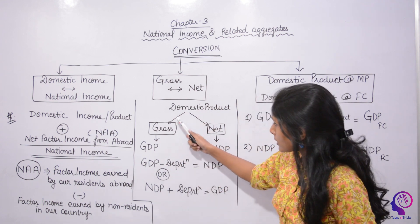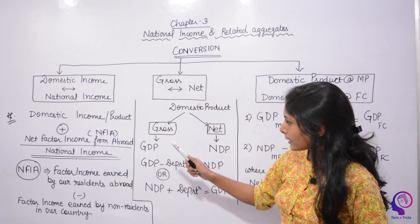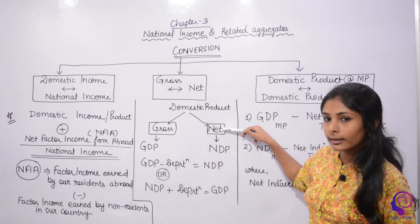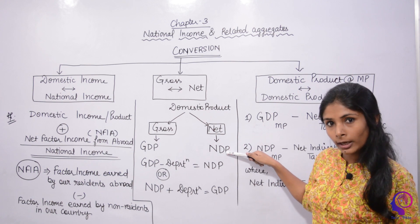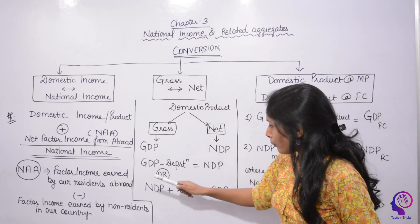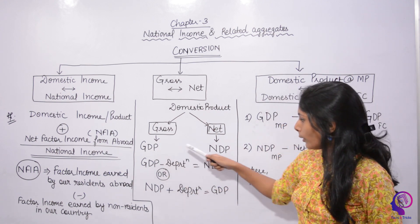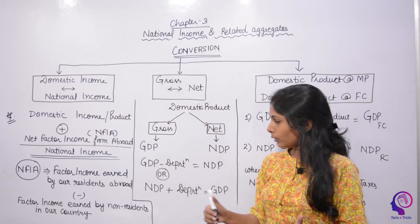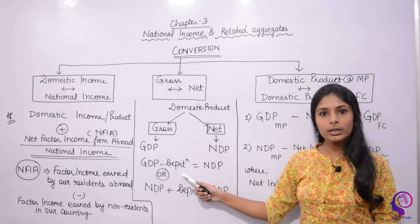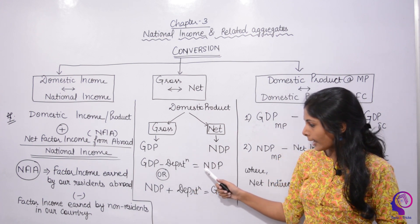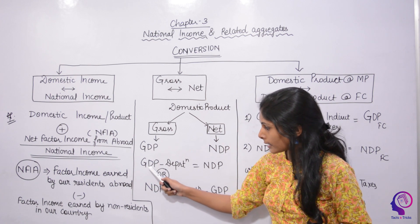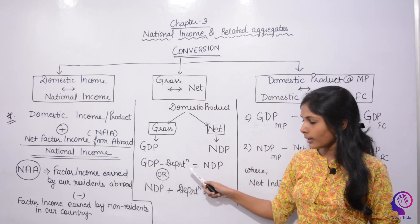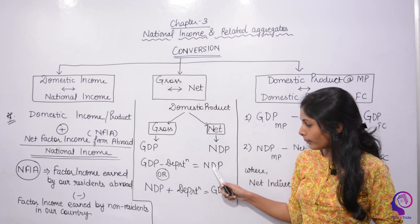Let me explain. If we have gross domestic product, and you want to convert GDP into NDP, then since gross is big and net means something reduced, if you subtract depreciation, it will become NDP. That means: Gross Domestic Product minus Depreciation equals Net Domestic Product.